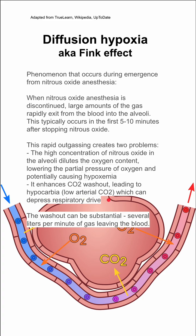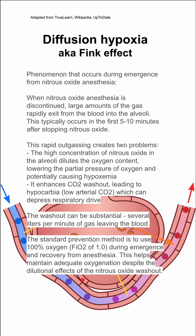The washout can be pretty substantial — several liters per minute of gas can leave the blood at the same time. In order to prevent this, you should use 100% oxygen, an FiO2 of 1.0, during emergence and recovery from nitrous oxide anesthesia. This helps to maintain adequate oxygenation despite the dilutional effects of the nitrous oxide washout.